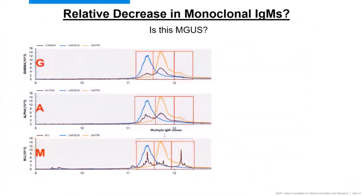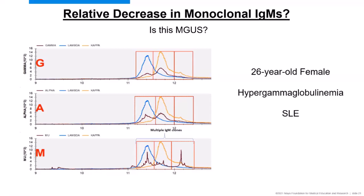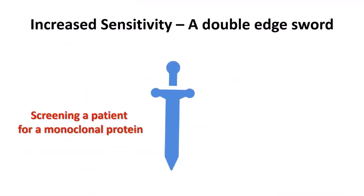For example, a patient where lambda and kappa pull-downs show no real peaks, but in the IgM fraction distinct clones appear — very low-level since they don't compete with IgG and IgA. Would you call this an M protein? It changes when you learn this is a 26-year-old female with hypergammaglobulinemia and a diagnosis of lupus. These edge cases require careful interpretation.